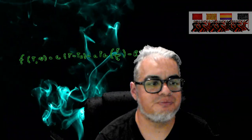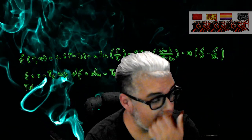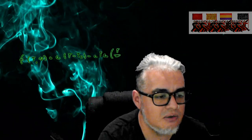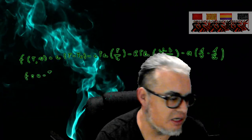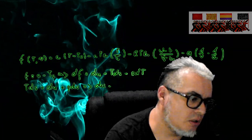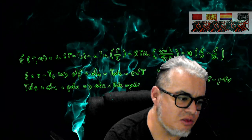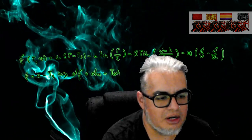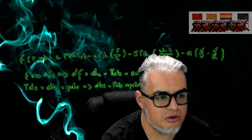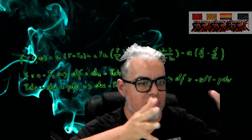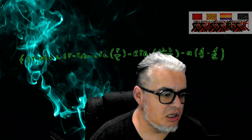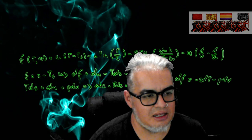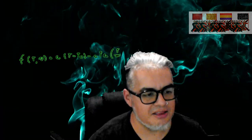Habíamos visto el problema de los metrónomos que se sincronizan cuando el medio en el que están puede transmitir el momento angular. Veíamos en uno de los ejemplos una tabla delgada de triple A, y en otro, un dispositivo que se movía de un lado para el otro. La transmisión del momento angular corrige la frecuencia del metrónomo y entra en fase con todos los demás.